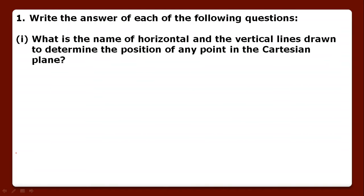First question is: what is the name of horizontal and the vertical lines drawn to determine the position of any point in the Cartesian plane? In Cartesian plane we have two lines, one horizontal and one vertical line. For any point location we need these two lines, so we have to name them: the x-axis and the y-axis respectively. The horizontal line is called x-axis and the vertical line is y-axis.